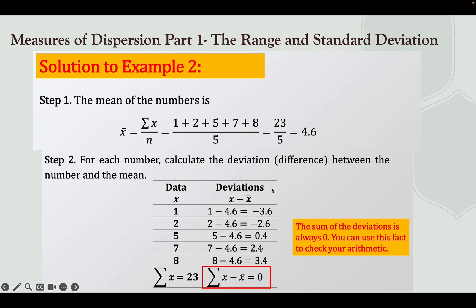To find the deviation, subtract the mean from each data value. So: 1 minus 4.6 = −3.6; 2 minus 4.6 = −2.6; 5 minus 4.6 = 0.4; 7 minus 4.6 = 2.4; and 8 minus 4.6 = 3.4.